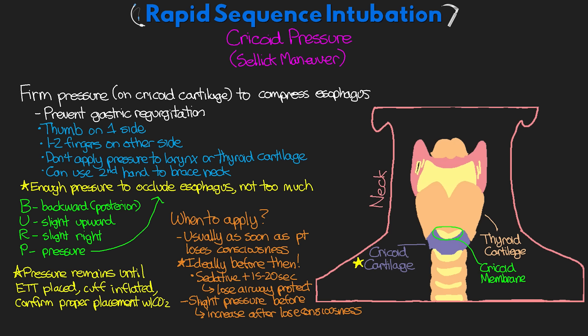There are risks with using cricoid pressure, ranging from inhibiting the intubation to rupturing the esophagus, as well as fracturing the cricoid cartilage ring. Many times when this pressure needs to be applied, the respiratory therapist is the one assisting with this, though it's certainly not uncommon for the nurse to be the one applying this pressure as well.